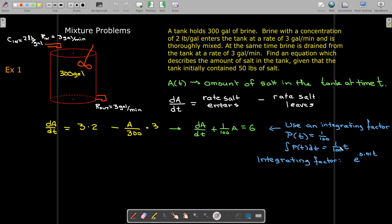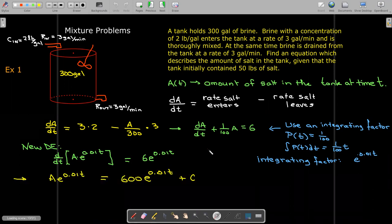And then our integrating factor will be e to the power of one over 100t, or e to the power of 0.01t. So we'll get a new differential equation by multiplying both sides by our integrating factor. And then we will integrate both sides. Of course, we get our constant of integration.